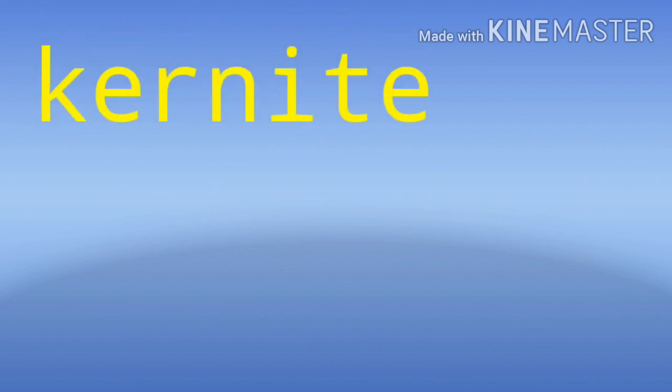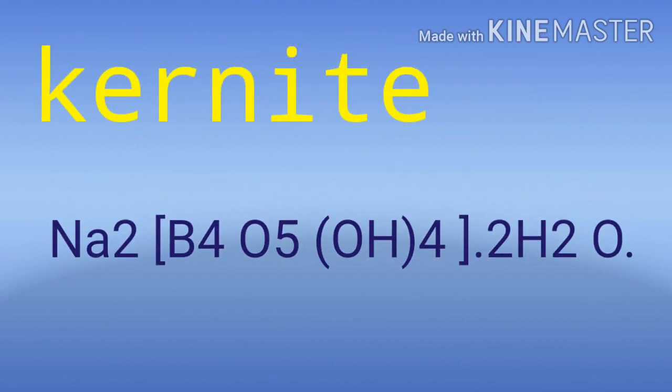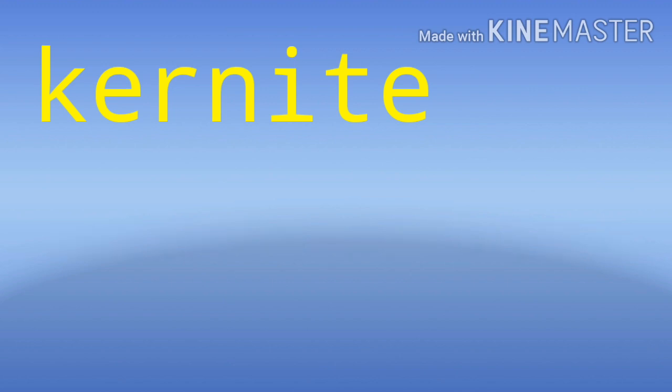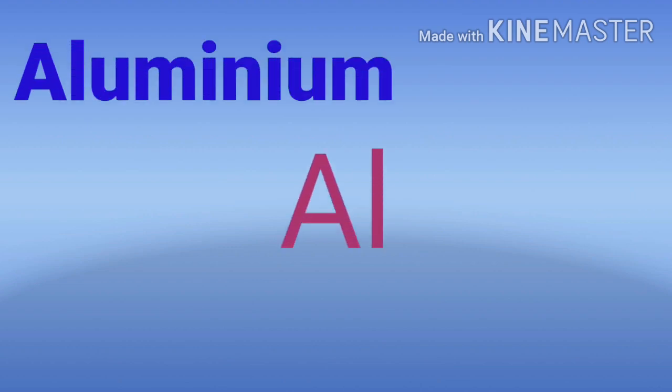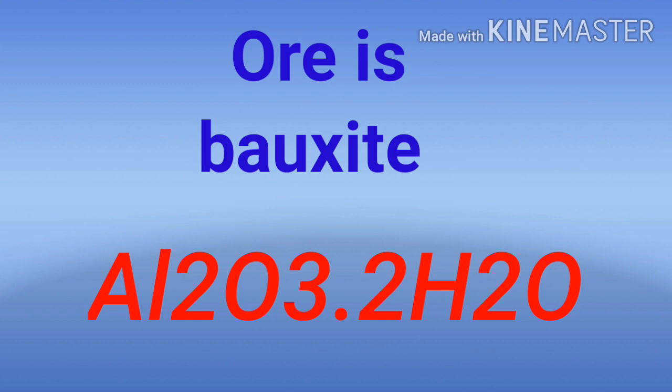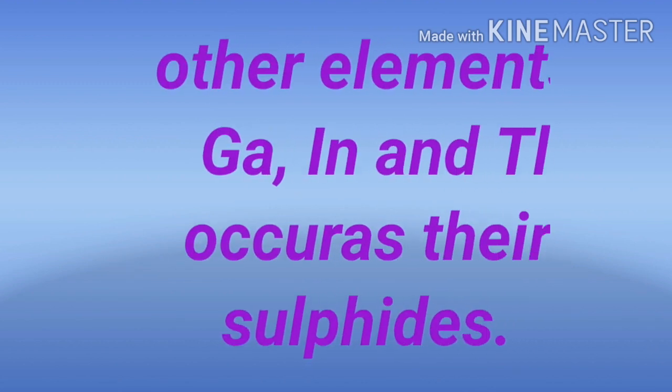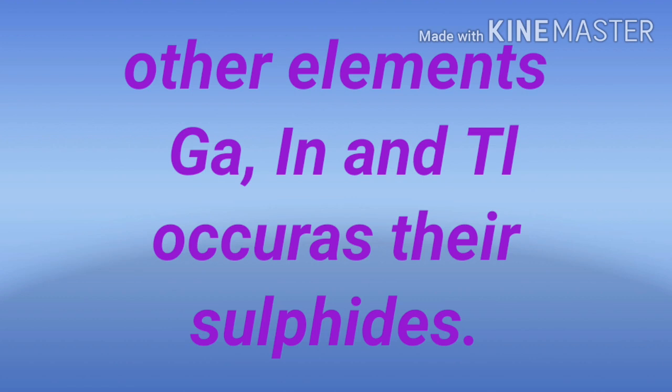The second ore is kernite, with formula Na2B4O5(OH)4 · 2H2O. The second member of the boron family is aluminium. The symbol is Al. The important ore is bauxite, with formula Al2O3 · 2H2O. Other elements, gallium and indium, occur in their sulphides.